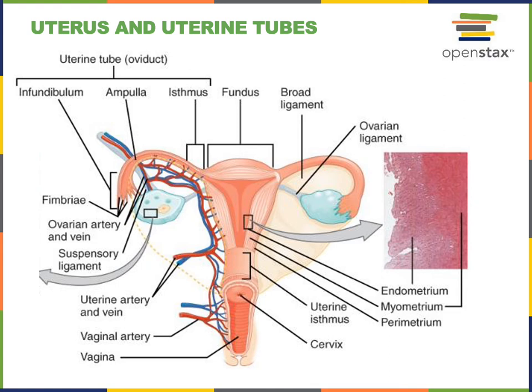There are three major regions of the uterine tube. The isthmus is the narrow region attached to the uterus. The ampulla is the middle segment and is normally where fertilization occurs. The infundibulum is the expanded funnel-shaped end of the uterine tube with numerous finger-like extensions called fimbriae that drape around the ovary. Beating cilia and peristaltic contractions of smooth muscle in the wall of the uterine tube facilitate transport of an embryo into the uterus.